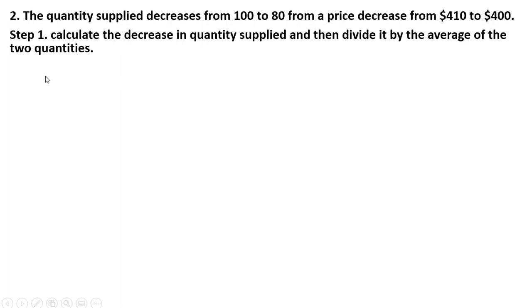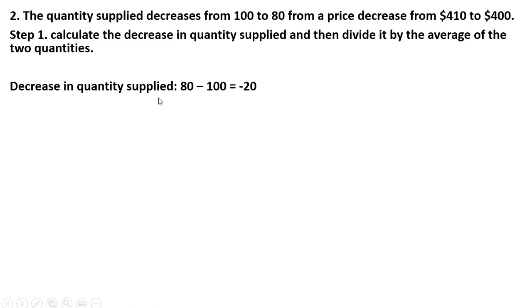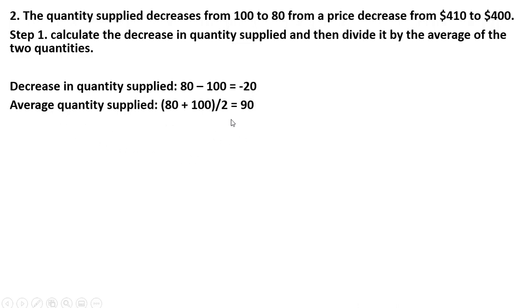Moving on to the next example: the quantity supplied decreases from 100 to 80 from a price decrease from $410 per unit to $400 per unit. Following the same three steps, the change in quantity supplied is a decrease of 20 units. The average of these two quantities is 90, since 180 divided by 2 is 90. So minus 20 divided by 90 gives us minus 0.22.